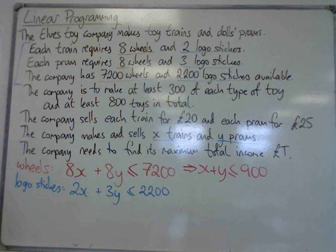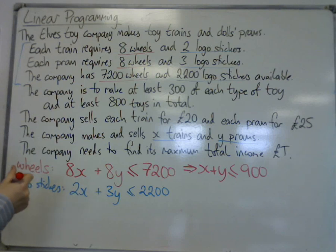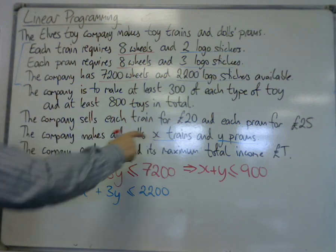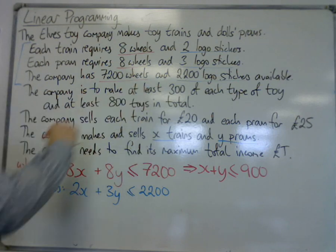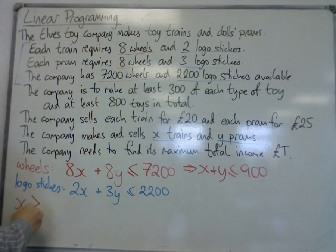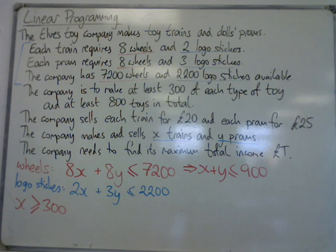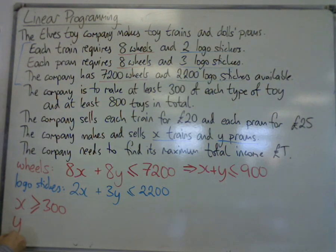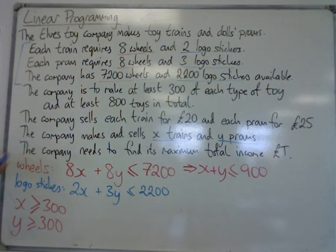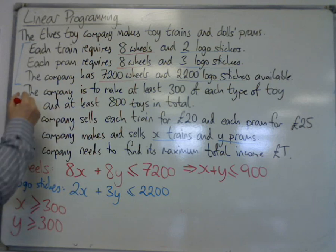Then we have: the company is to make at least 300 of each type of toy. So X is trains — it's at least 300, so we need x greater than or equal to 300, because we need 300 or more trains to be made. We also need 300 or more prams, so y greater than or equal to 300 is also an inequality. So that's already four inequalities built up here.